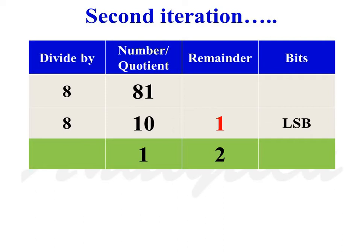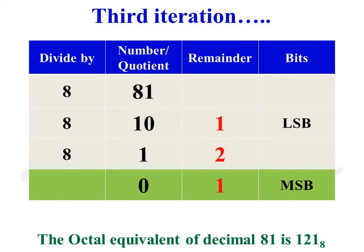As the quotient is not equal to 0, we continue for a third iteration. When we divide 1 by 8, we will get 0 as the quotient and 1 as the remainder. The remainder of the first division forms the LSB and the remainder of the last division forms the MSB. So the octal equivalent of decimal number 81 is 121.